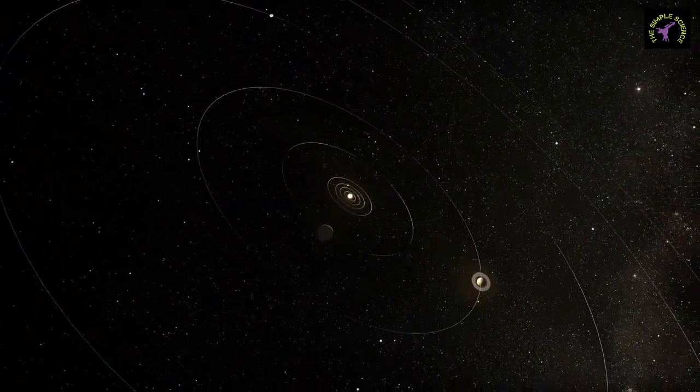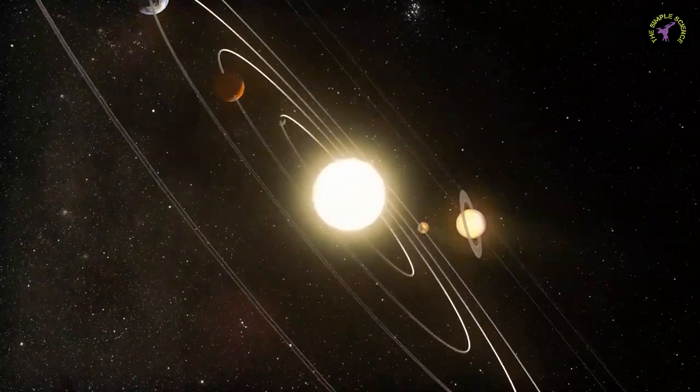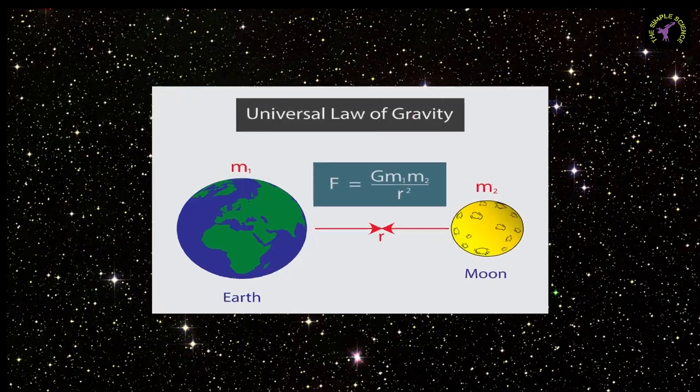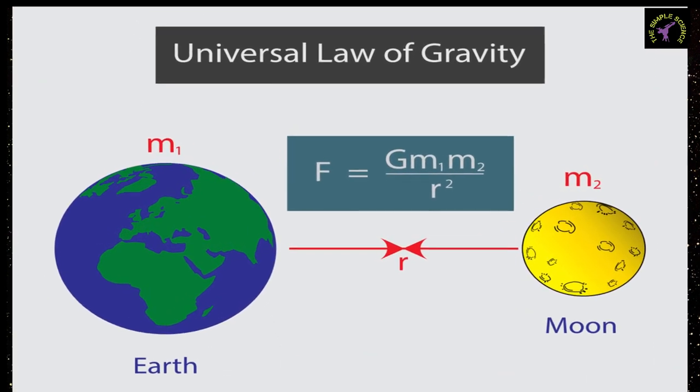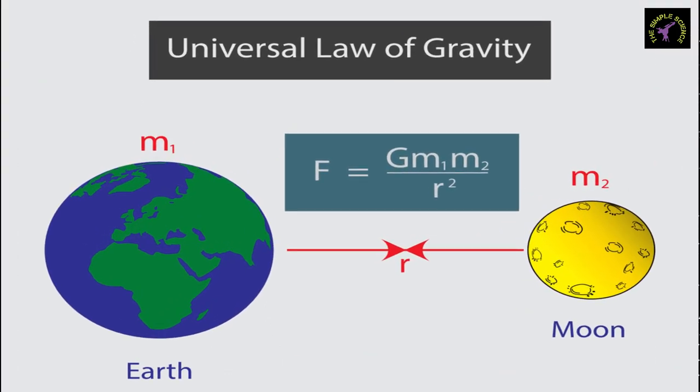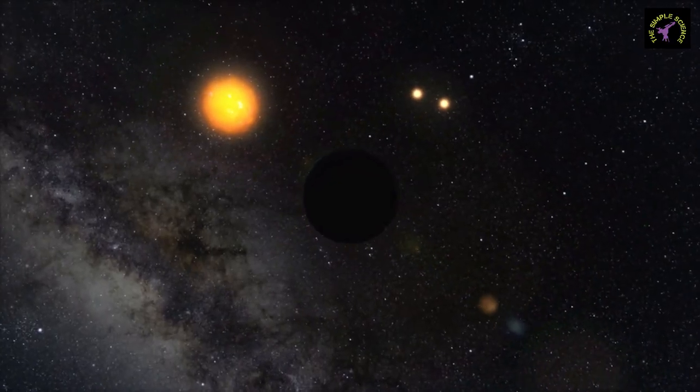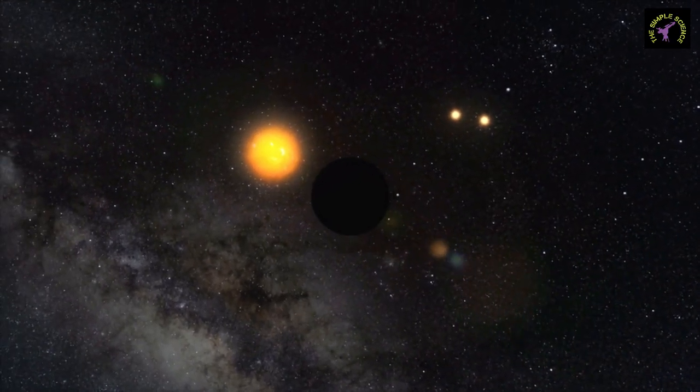Newton postulated a law of universal gravitation, according to which each body in the universe is attracted towards every other body by a force. This force of attraction is directly proportional to the product of masses of the two bodies and inversely proportional to the square of the distance between them. The force is stronger for more massive and closer bodies.